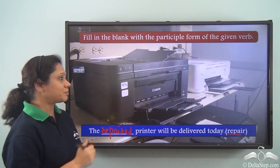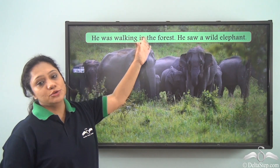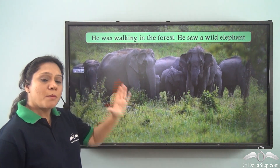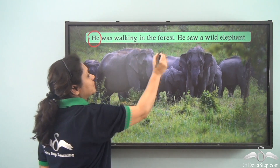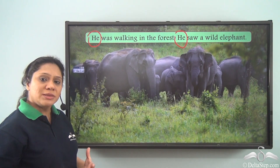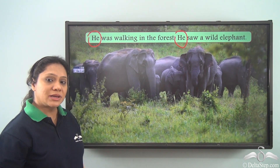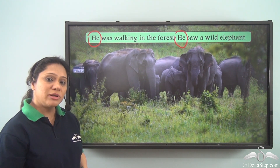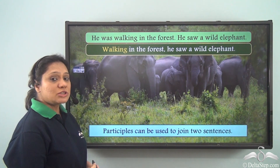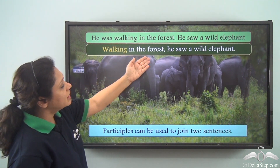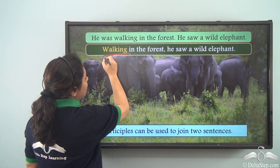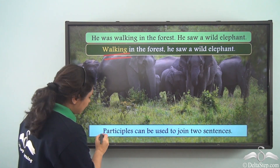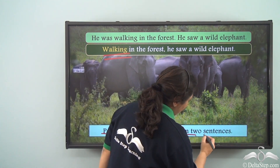Now let us read two sentences: 'He was walking in the forest. He saw a wild elephant.' Both sentences have the same subject 'he,' and both show actions happening simultaneously. To join them as a single sentence we write: 'Walking in the forest, he saw a wild elephant.' We have used the present participle 'walking' to join both sentences which share the same subject. So we can say that participles can be used to join two sentences.